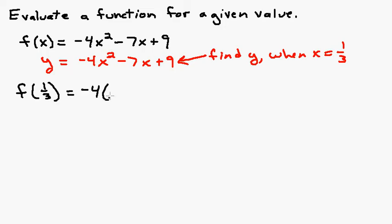So I'm going to rewrite this equation. Wherever there's an x, I'm going to put a one third. There's two spots I need to put one thirds. Now from this point, it's just a matter of arithmetic and order of operations. It's just working the problem out.